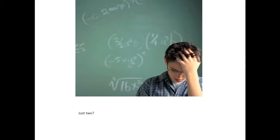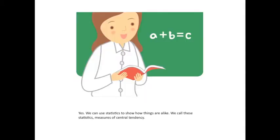Just two? Yes. We can use statistics to show how things are alike, and we call these statistics measures of central tendency.